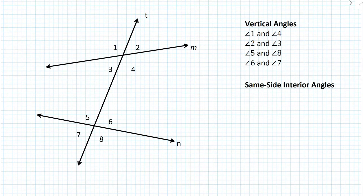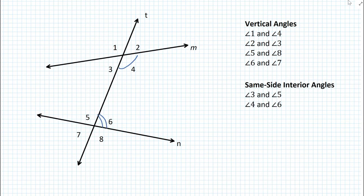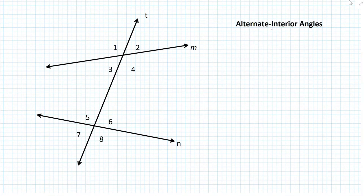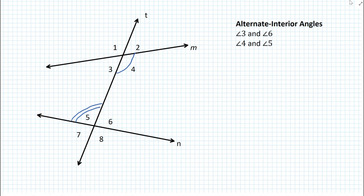Then we have something called same-side interior angles. These are all the angles that lie on the inside. For example, if you look at angle 3 and angle 5, they lie in the same side. And so is angle 4 and angle 6. Then we have same-side exterior angles that actually lie on the same side, but are on the exterior side. For example, angle 1 and angle 7, and also we have angle 2 and angle 8. Then we have alternate interior angles — these are the angles that lie in the interior of the lines, but are actually alternating. For example, angle 3 and angle 6, and so are angles 4 and 5.